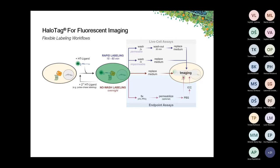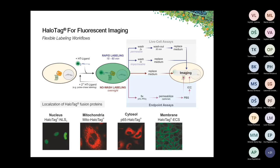Once you've fluorescently labeled your HaloTag fusion protein within the cell, you can readily and very easily localize that protein. These images nicely emphasize that HaloTag is really capable of going anywhere within the cell. Fusing HaloTag to a nuclear localization sequence gives nuclear staining; adding a mitochondrial targeting sequence gives mitochondrial staining. P65-HaloTag under non-stimulated conditions is restricted to the cytosol with nice exclusion of the nucleus, and fusing HaloTag to a membrane protein gives a nice staining of the cellular membrane.